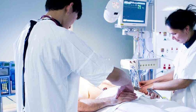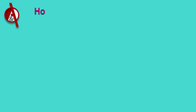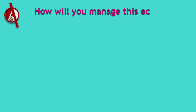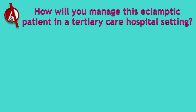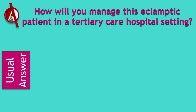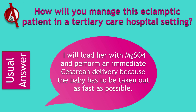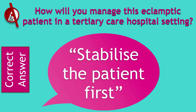Now that the patient has been admitted in the tertiary care hospital, how will you manage an eclamptic patient in a tertiary care hospital setting? The usual incorrect answer is to load her up with magnesium sulfate and perform an immediate caesarean delivery because the baby has to be out as fast as possible. This is the most incorrect thing to do — and yet, believe me, in most institutions, especially in India, this is exactly what is done. The correct thing to do is to stabilize the patient before attempting to deliver her.